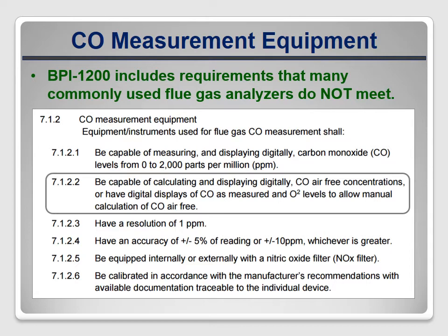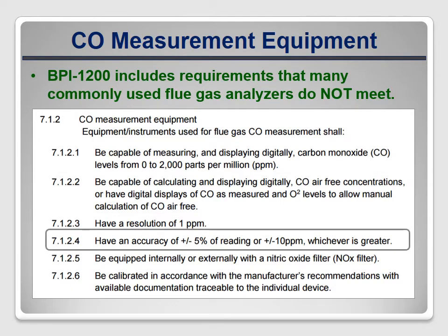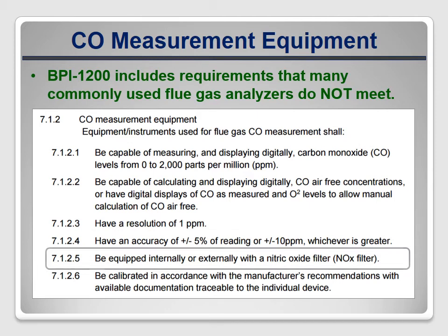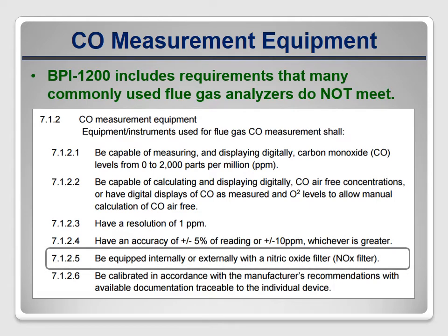In addition, BPI 1200 includes accuracy requirements that some common models don't meet. For example, the Testo 327 combustion analyzer has an accuracy of plus or minus 20 parts per million from 0 to 400 parts per million of carbon monoxide, but the standard requires an accuracy of plus or minus 10 parts per million or better. Finally, the standard requires that all models be equipped with a NOx filter, because without one, the meter will read an inaccurately high CO level. Most Bacharach combustion analyzers don't have an internal NOx filter, though one can be added externally, spliced into the intake tube.